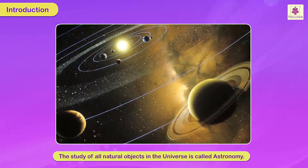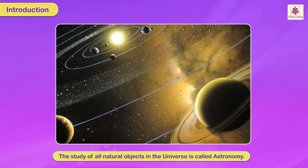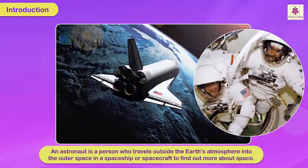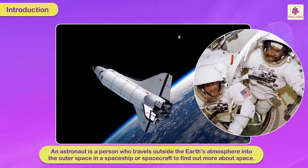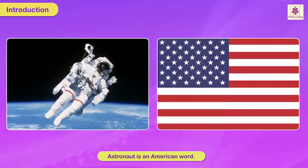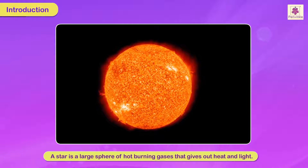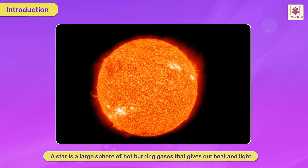The study of all natural objects or heavenly bodies in the universe is called astronomy. The scientists who study and conduct research in astronomy are called astronomers. An astronaut is a person who travels outside the Earth's atmosphere into outer space in a spaceship or spacecraft to find out more about space. Astronaut is an American word; in Russia they are known as cosmonauts.